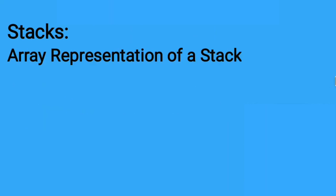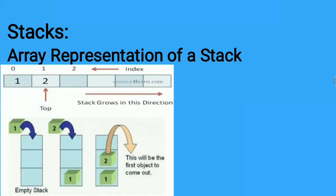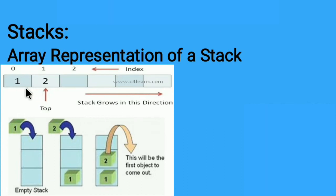Let us continue with the first one — array representation of a stack, which is a static or fixed structure. Here we have an array with elements whose subscript starts from 0, 1, 2, 3, and so on. There is one pointer called top. Top is initially pointing to null, and once incremented it points to the 0th location, then the first, the second index, and so on.